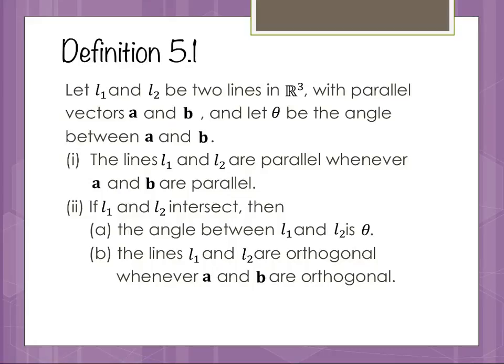If we have two lines l1 and l2 in R3 with direction vectors a and b, and theta is the angle between them, there are a couple of things that can happen. The lines could be parallel — they'll be parallel when the vectors are parallel. Or the lines could intersect, and if they intersect, the angle between them is theta. The lines l1 and l2 are orthogonal whenever a and b are orthogonal.